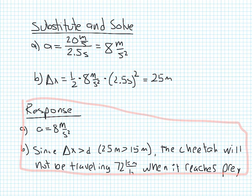that basically means the cheetah is not going to be traveling the 72 kilometers per hour when it reaches the prey. Because it takes actually a further distance to actually reach that 72 kilometers per hour. So basically what it comes down to is when it gets to 15 meters, he will actually not be traveling at this top speed.